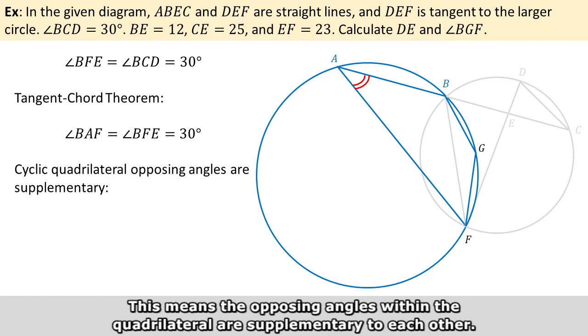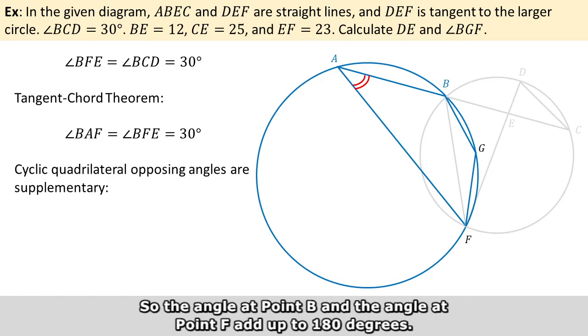This means the opposing angles within the quadrilateral are supplementary to each other. So the angle at point B and the angle at point F add up to 180 degrees.